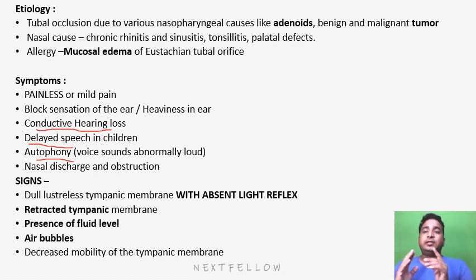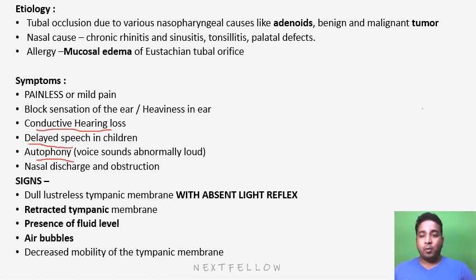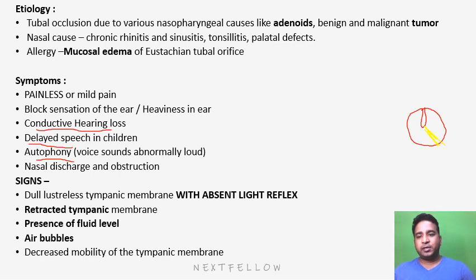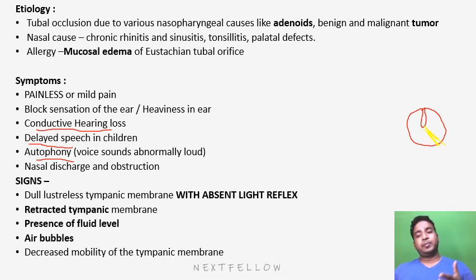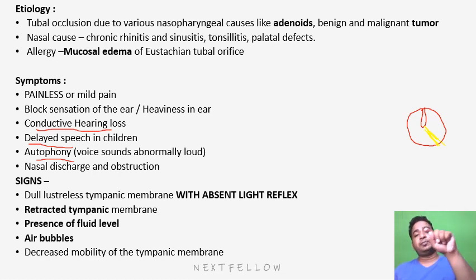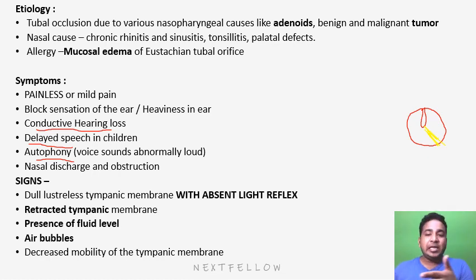Signs: the tympanic membrane will appear dull with no light reflex. Normally there is a light reflex projected anteriorly and inferiorly — the first sign in SOM is absence of this light reflex, making the tympanic membrane dull and lusterless. There may also be retraction of the tympanic membrane, and fluid levels with bubbles may be visible — as seen in the diagram with bubbles and fluid. There is also decreased mobility of the tympanic membrane because fluid beneath it prevents proper movement.